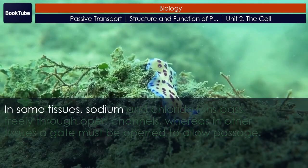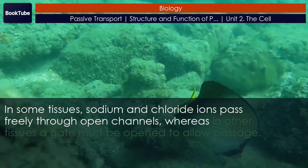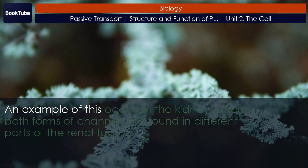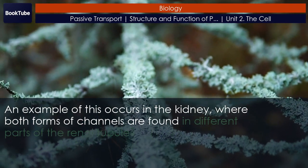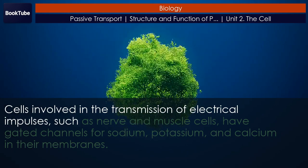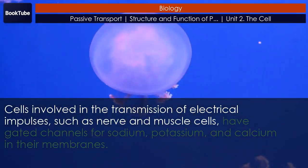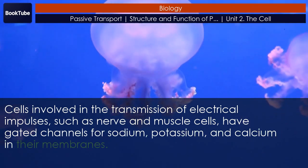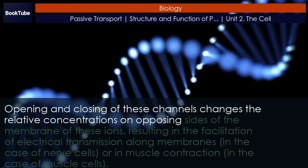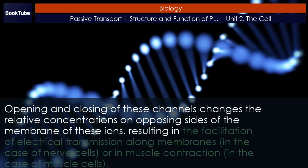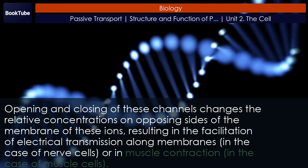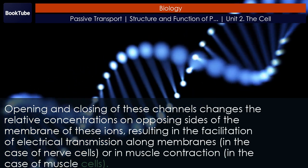In some tissues, sodium and chloride ions pass freely through open channels, whereas in other tissues a gate must be open to allow passage. An example of this occurs in the kidney, where both forms of channels are found in different parts of the renal tubules. Cells involved in the transmission of electrical impulses, such as nerve and muscle cells, have gated channels for sodium, potassium and calcium in their membranes. Opening and closing of these channels changes the relative concentrations on opposing sides of the membrane of these ions, resulting in the facilitation of electrical transmission along membranes in the case of nerve cells, or in muscle contraction in the case of muscle cells.